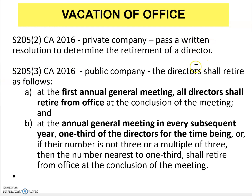At the first annual AGM, all directors shall retire at the conclusion of the meeting — this is the first time they hold their AGM. When we incorporate a company, we name those directors, and all those directors will retire during the first AGM and can be re-elected. At the AGM in subsequent years, one-third of the directors for the time being — or if the number is not three or a multiple of three, the number nearest to one-third — shall retire from office at the conclusion of the meeting.